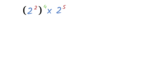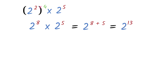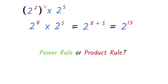Please try this: simplify 2 exponent 2, all exponent 4, times 2 exponent 5. Students often get confused about when to add and when to multiply exponents. First, apply the power rule to 2 exponent 2 all exponent 4: multiply exponents 2 by 4 to get 8, giving 2 exponent 8. Then multiply by 2 exponent 5 using the product rule: add exponents 8 plus 5 to get 13, giving 2 exponent 13 as our answer. Master the difference between the power rule and the product rule — a lot of students get confused here.